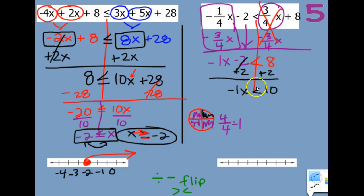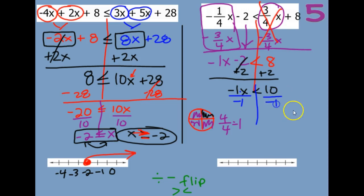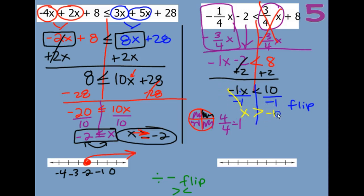Then the opposite of multiplying is dividing by negative 1. Be careful — whenever you divide by a negative, you have to flip your inequality symbol. So then we have x is greater than a negative — 20 divided by 10 is 2... so negative 10.